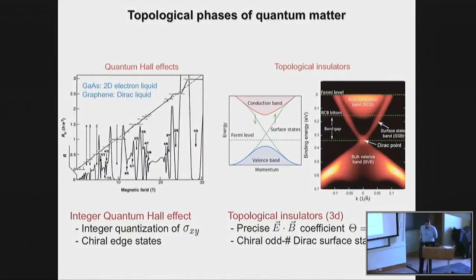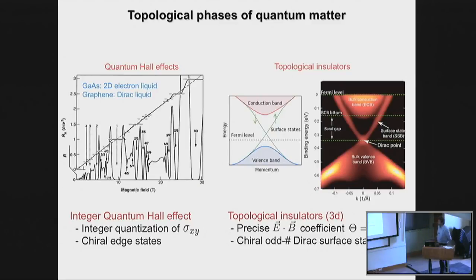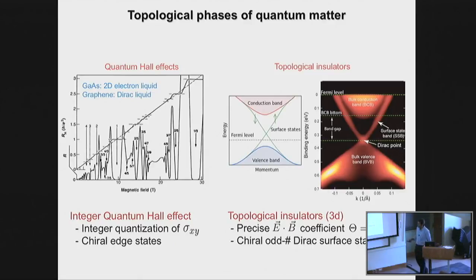We've heard a lot about topological phases of quantum matter over the last few days. This is work going back to quantum Hall physics — both integer and fractional quantum Hall states — but rejuvenated by the discovery of two- and three-dimensional topological insulators. There are very precise ways in which one can define, at least for integer states or non-interacting systems, a very precise integer quantization of a certain response function and states at the boundary.